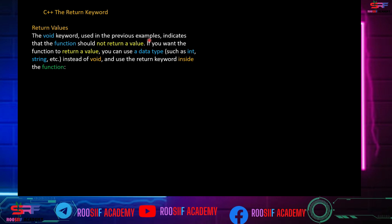The void keyword used in the previous example indicates the function should not return a value. If you want the function to return a value, you can use a data type such as integer, string, float, double. These are primitive data types in C++, such as integer, string, boolean.